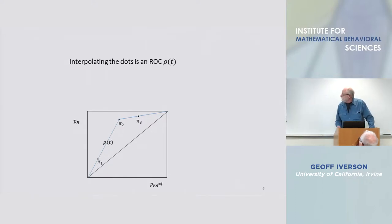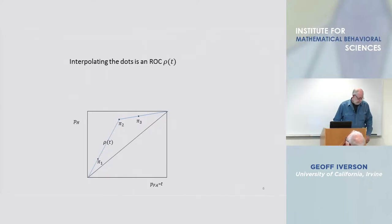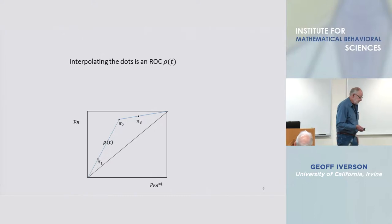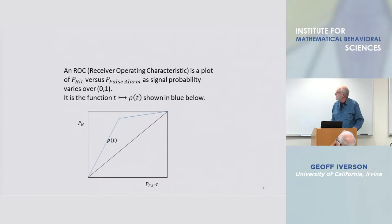And the underlying theory tells you that those points, you can connect the dots, and there is a function that interpolates the data and that function is called an ROC operating characteristic.